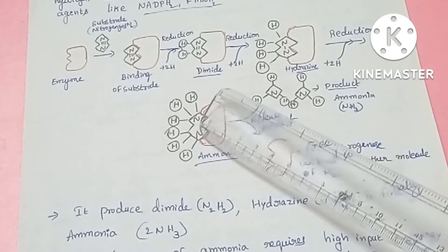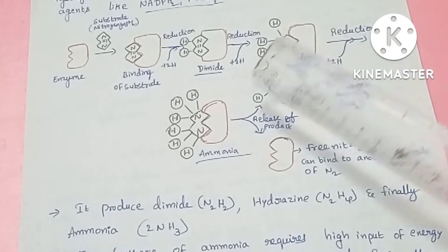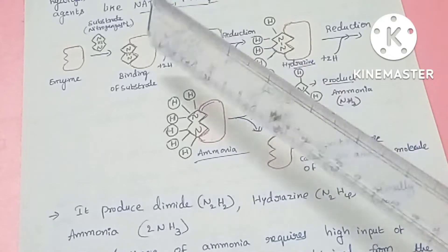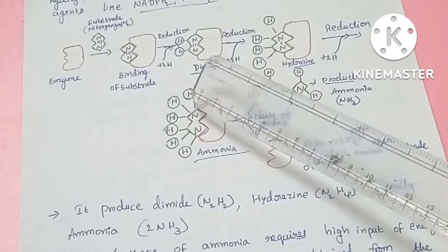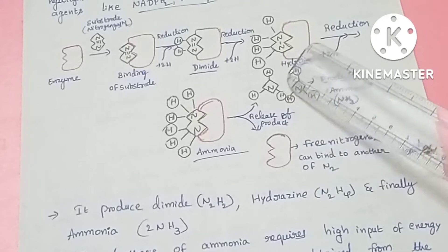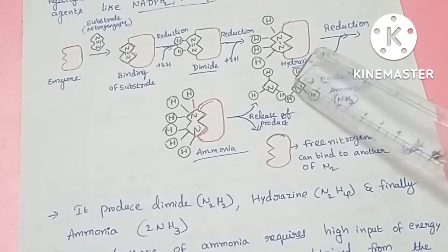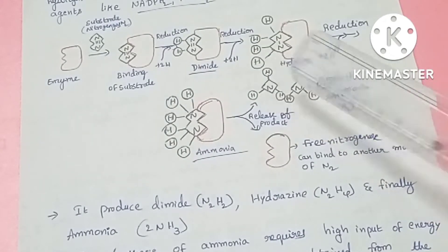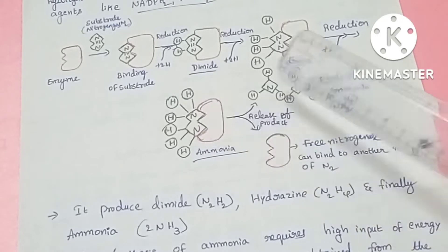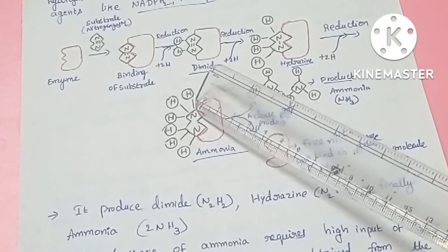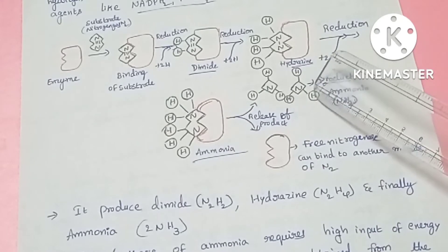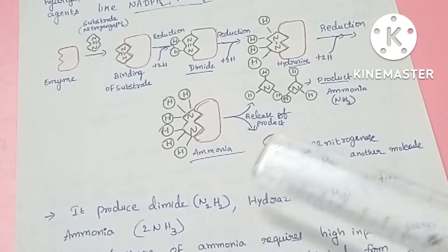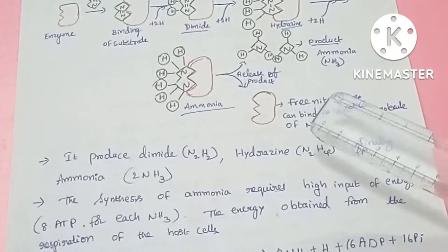The covalent bonds are fully broken, and this molecule becomes finally ammonia, NH₃. So from a single nitrogen molecule, ammonia is released. From one molecule of nitrogen, two ammonia molecules are produced — this is one ammonia and this is one ammonia. They are released from the active site, and then the enzyme becomes free to bind another nitrogen molecule.